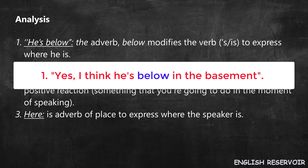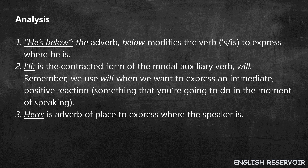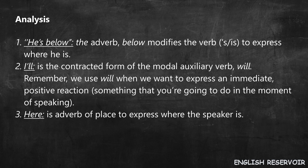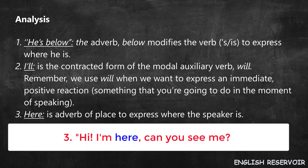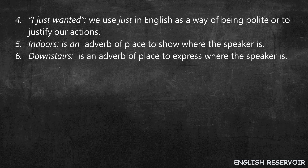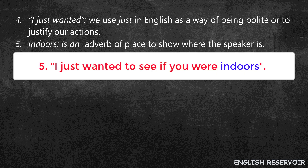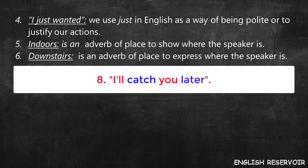Analysis. One: 'He's below' — the adverb 'below' modifies the verb to express where he is. Two: 'I'll' is the contracted form of the modal auxiliary verb 'will'. We use 'will' when we want to express an immediate positive reaction — something you're going to do in the moment of speaking. Three: 'Here' is an adverb of place to express where the speaker is. Four: 'Indoors' is an adverb of place to show where the speaker is. Five: 'Downstairs' — adverb of place to express where the speaker is.